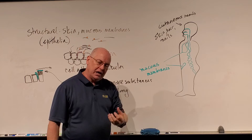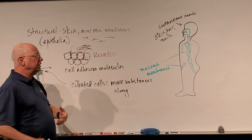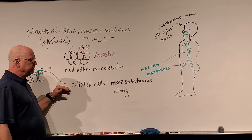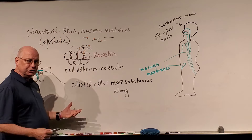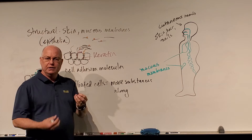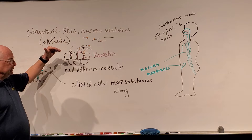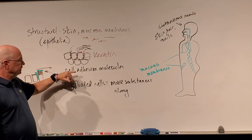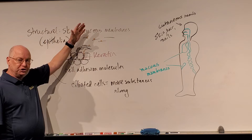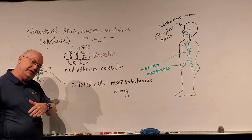Whenever something starts to tickle the membranes, we will either sneeze it out, snot it out, cough it out, or hack it out somehow. When you do that, you're literally getting rid of some of the mucus from what we call the mucus escalator, which is part of our ciliated cells. In our ears, we also secrete a waxy substance called cerumen that traps microbes, and our body tends to shed that. So the epithelial surfaces with their cell adhesion molecules preventing penetration, the shedding of cells, and the cilia moving things along are all part of our structural defense.